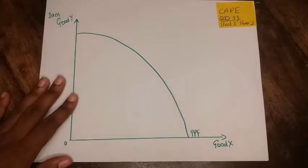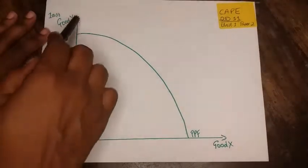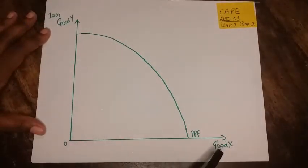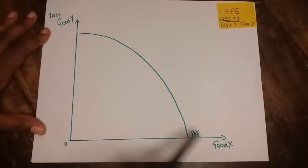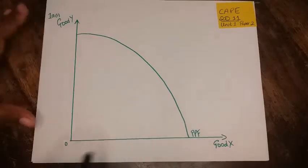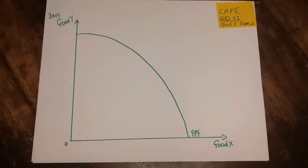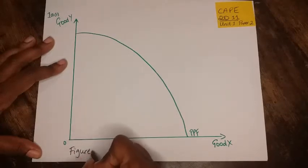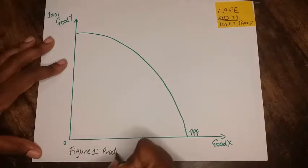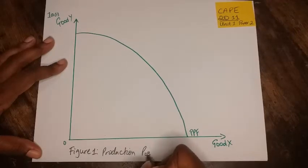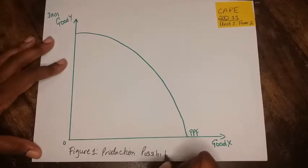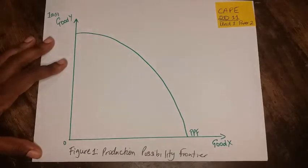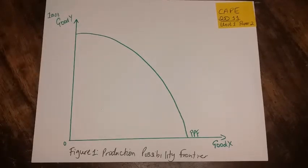So this is what it would look like. Notice I have my y-axis, x-axis, both labeled good Y, good X, and I have a concave PPF. And you can also give it a title, so you can call this Figure 1 and you can put production possibility frontier. That'll get your four marks.